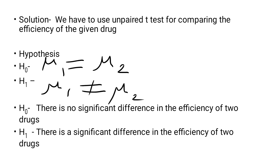Let's formulate the hypothesis first. In order to test the significance, the first step is formulating the hypothesis. H0 (null hypothesis): mu1 is equal to mu2 — there is no significant difference in the efficiency of the two drugs. H1 (alternative hypothesis): mu1 is not equal to mu2 — there is a significant difference in the efficiency of the two drugs.